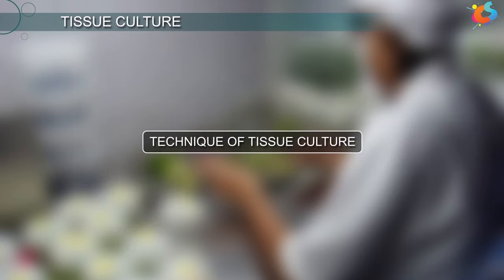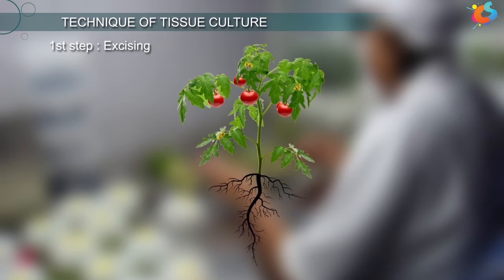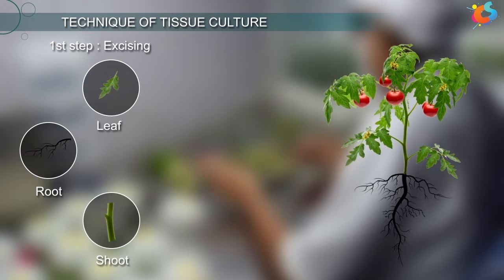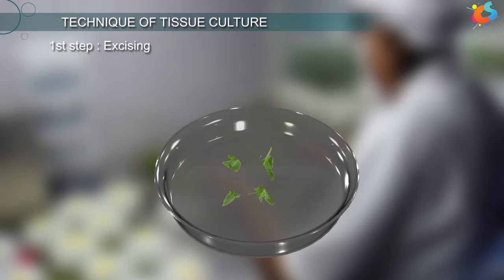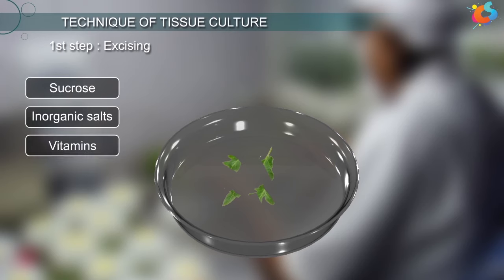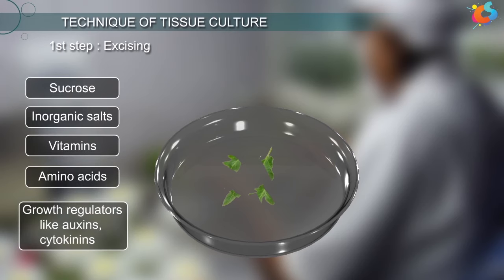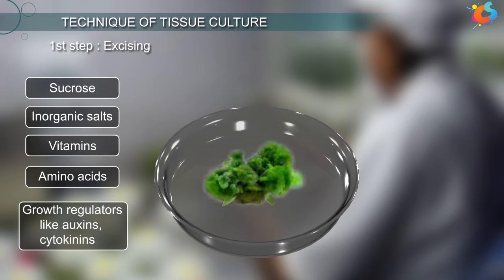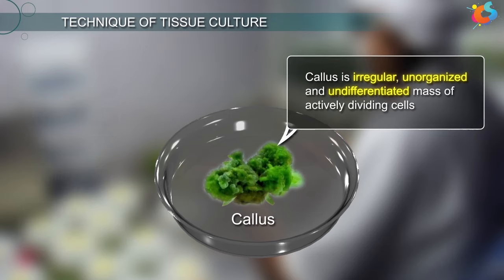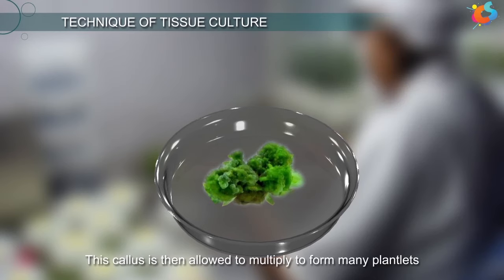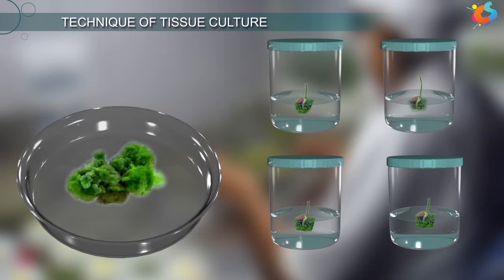The first step of tissue culture is excising or cutting a small part of plant tissue, like the leaf, root, or shoot of a plant. This cut-out part of the plant is then placed in a suitable nutrient medium containing a carbon source such as sucrose, inorganic salts, vitamins, amino acids, and growth regulators like auxins and cytokinins. The explants are allowed to multiply and form a group of tissues called callus. Callus is an irregular, unorganized, and undifferentiated mass of actively dividing cells. This callus is then allowed to multiply to form many plantlets, which are then transferred to a different container for rapid multiplication.